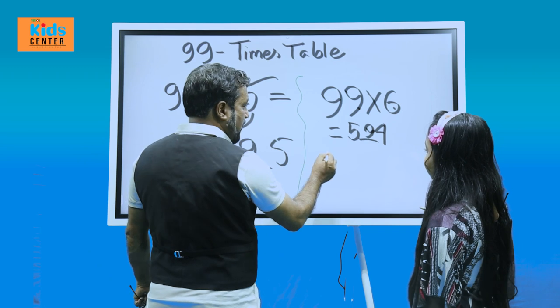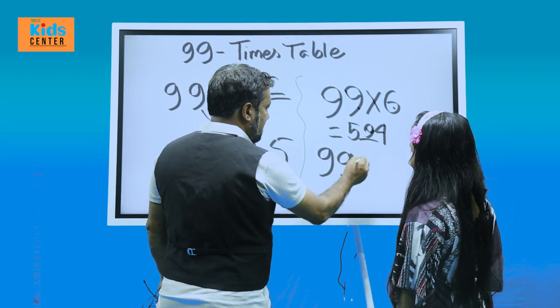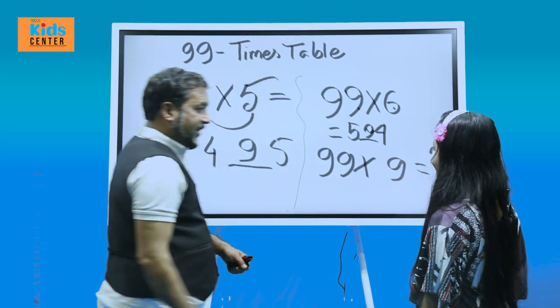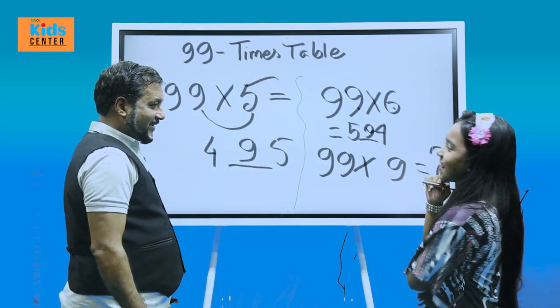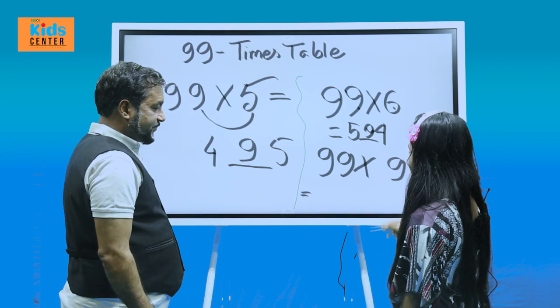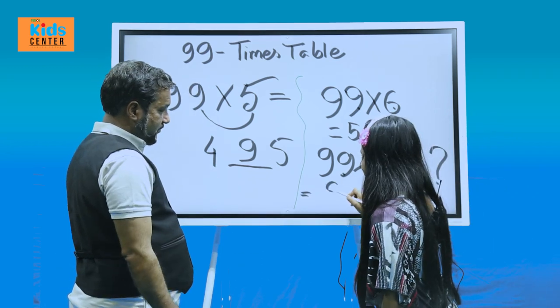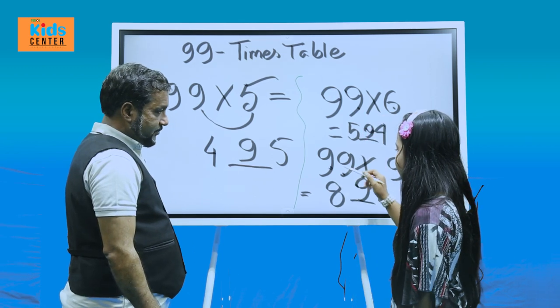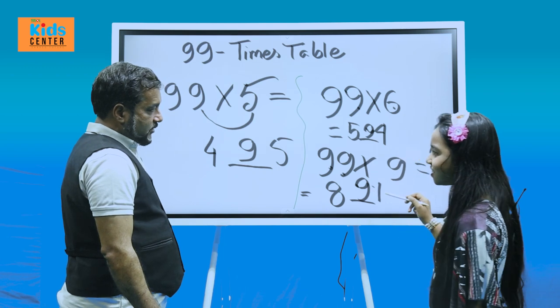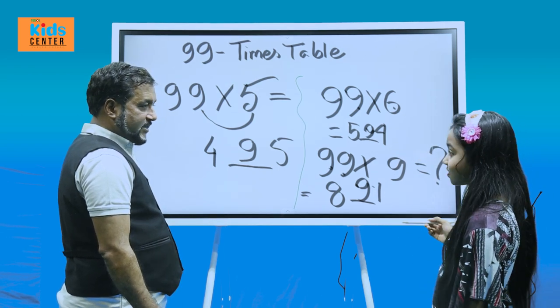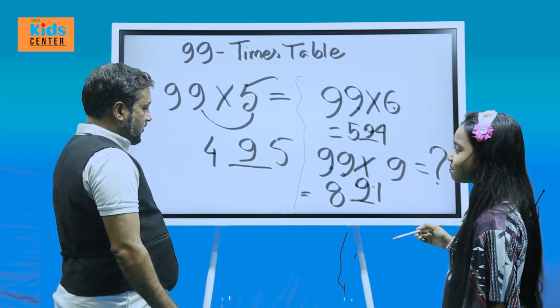Now, if I give you this problem, 99 times 9, what is the result? Now, you're going to fail. No, I'm not going to fail. Then prove your worth. Okay. Because 9, 9's are 81. So, this 9 is left, so it will be shifted here. So, 99 times 9 is 891.